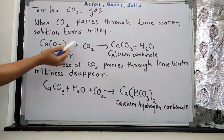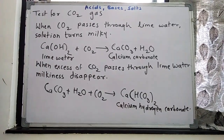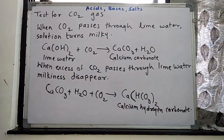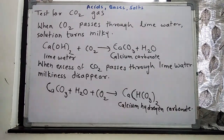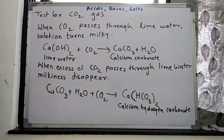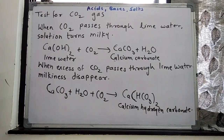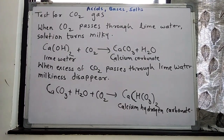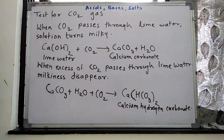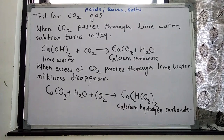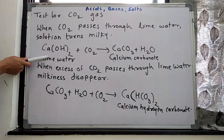When we pass carbon dioxide gas through lime water — the solution of Ca(OH)2 — the solution turns milky, meaning it becomes whitish. That is the test for CO2 gas. The solution turns milky with the formation of CaCO3 (calcium carbonate) and water.